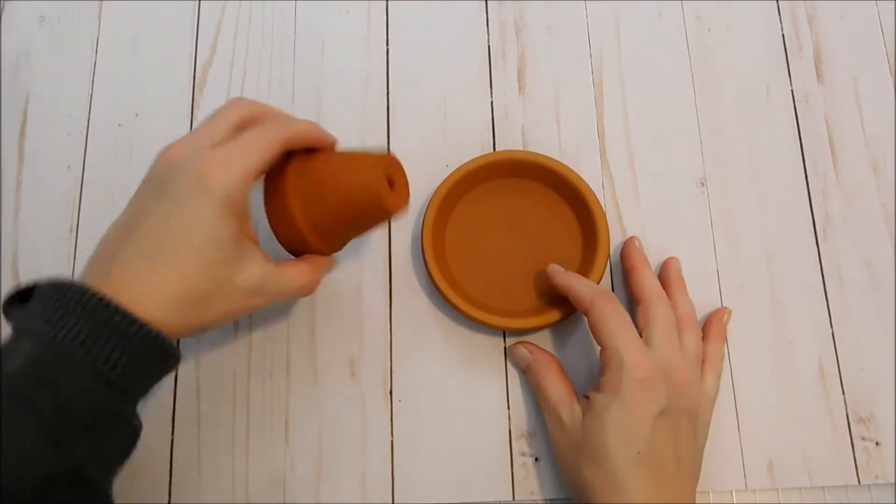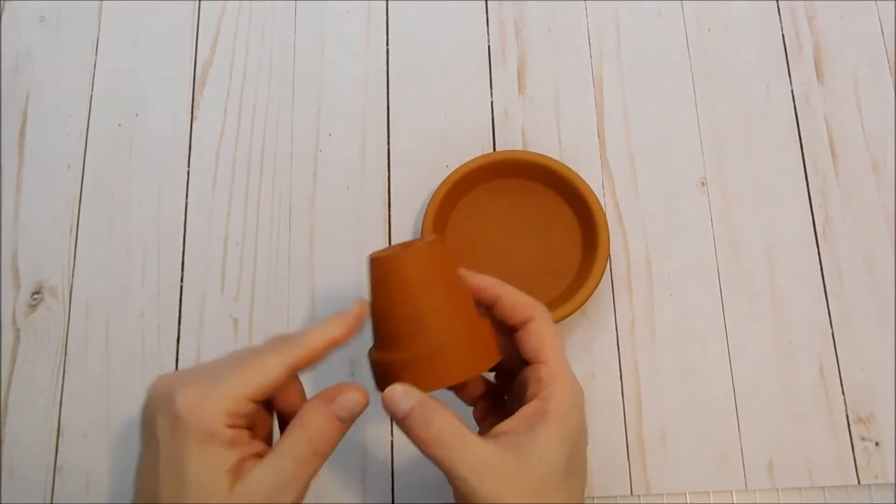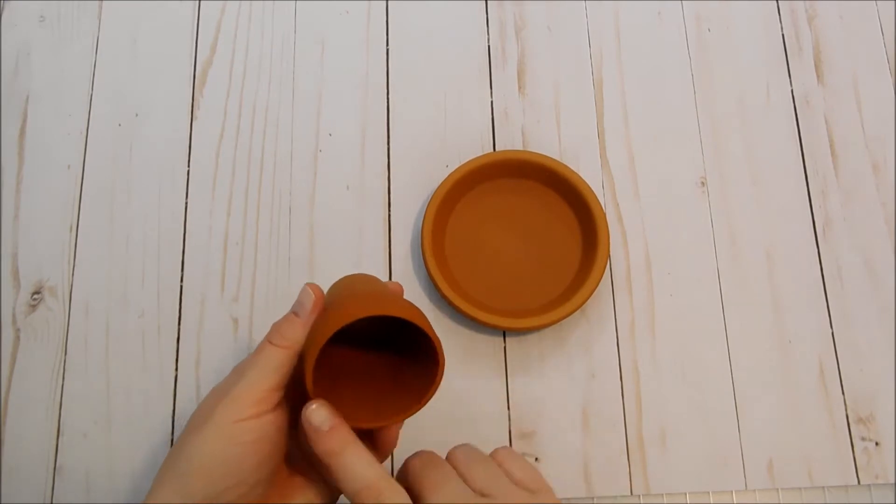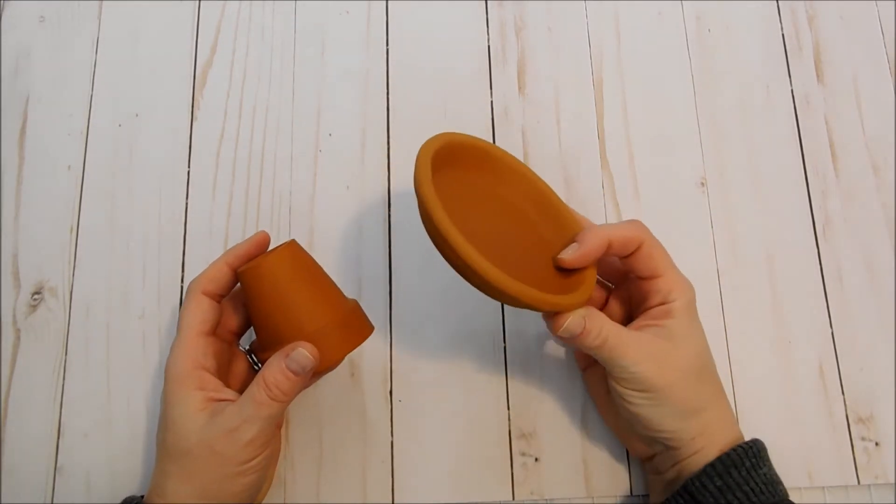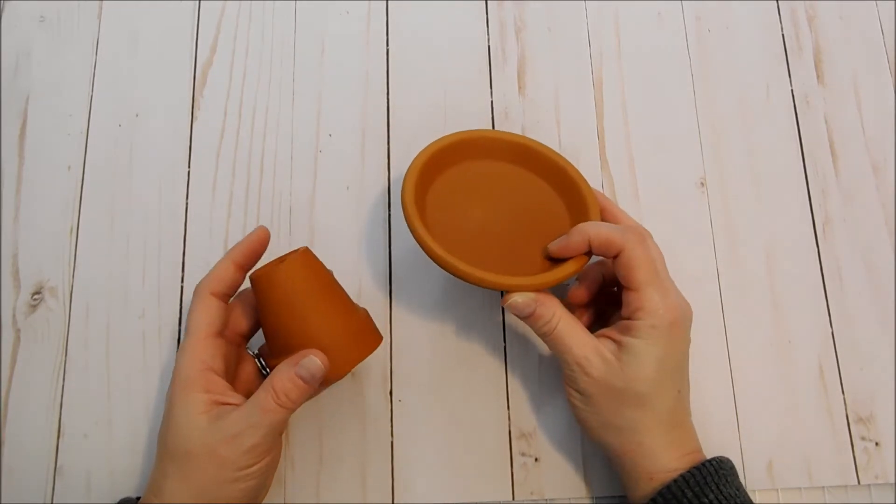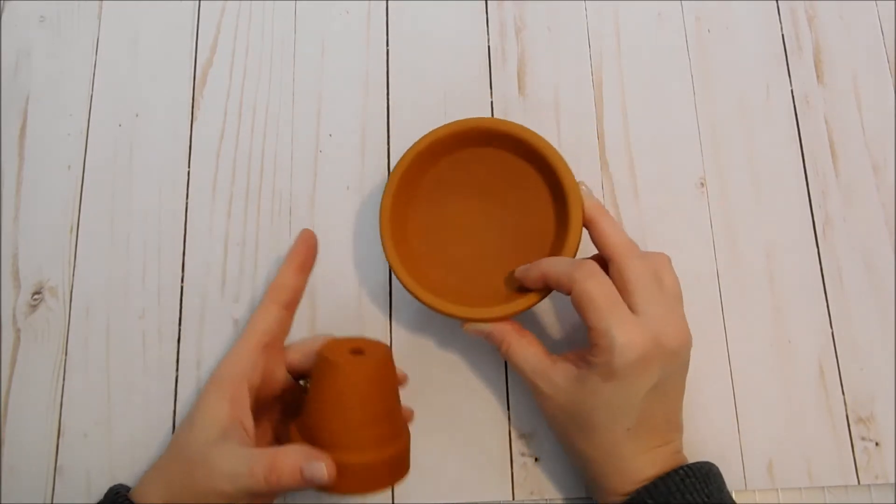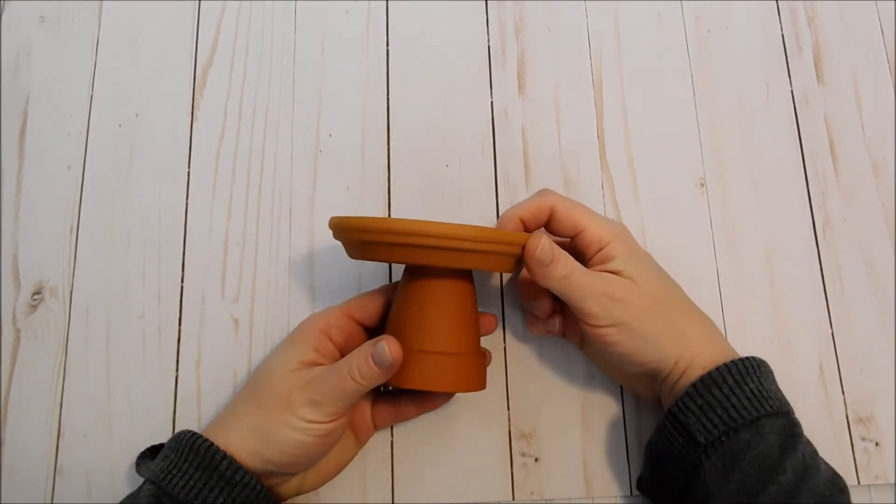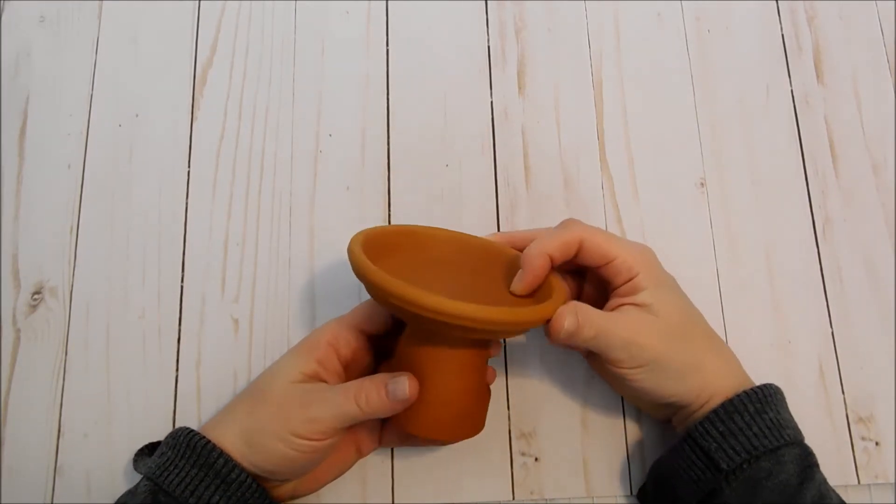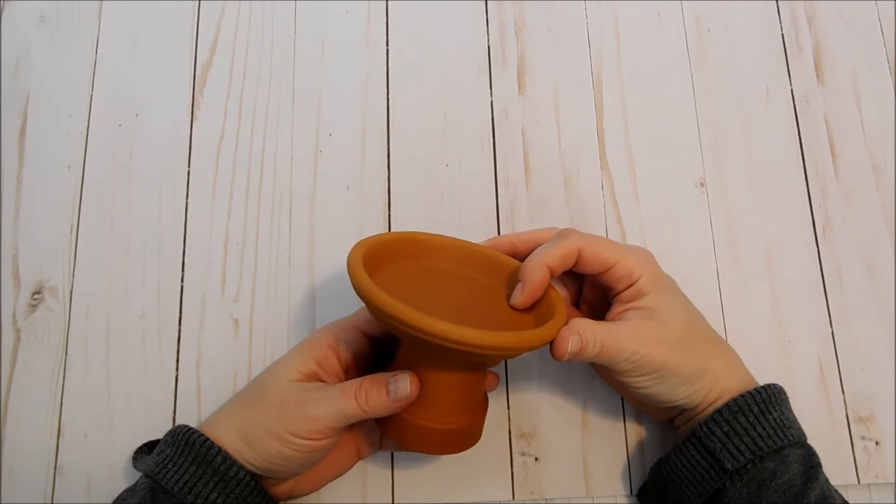And that is just to use this little terracotta pot here. It's about two and three quarter inches across the top of that. And then this is the plate from a four inch pot. It's about four and a quarter inches all the way across the entire plate. So I just thought we would glue those two together there and make a little cupcake pedestal stand.